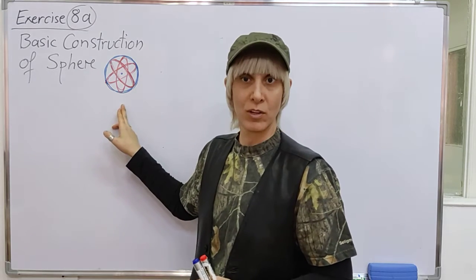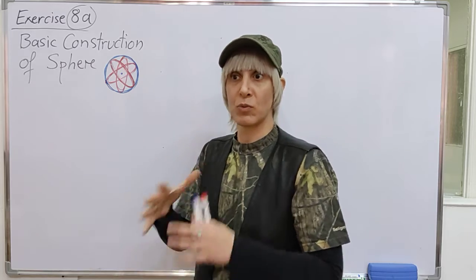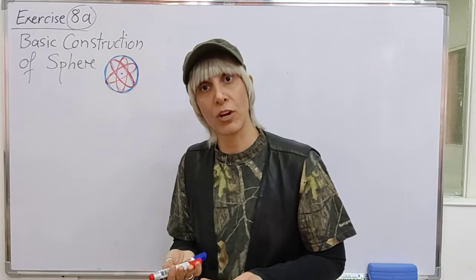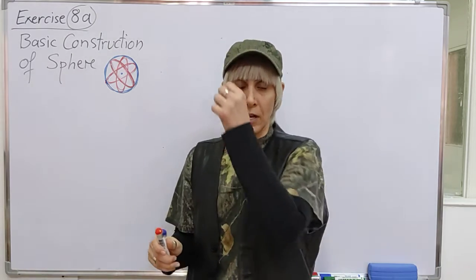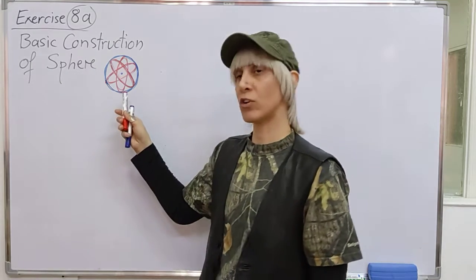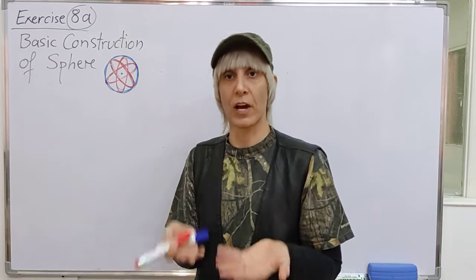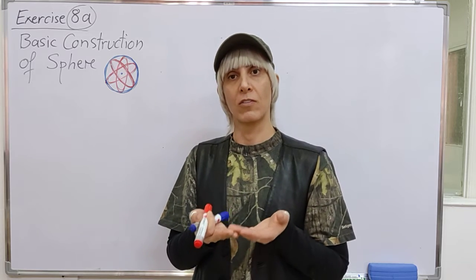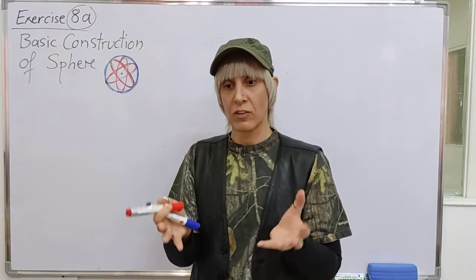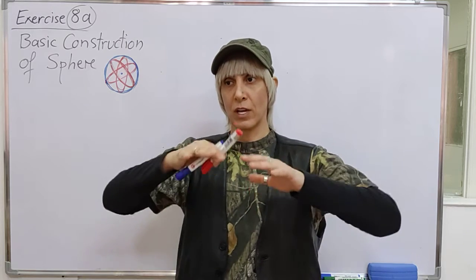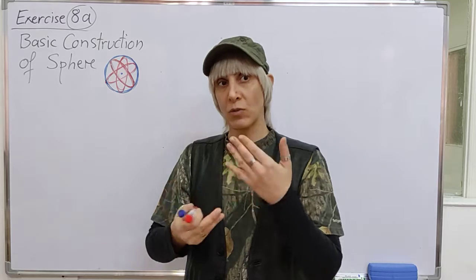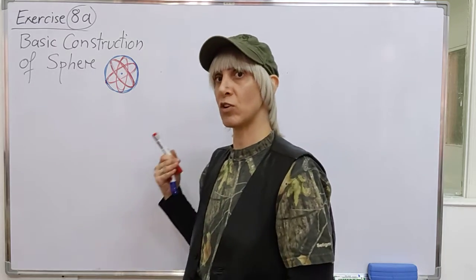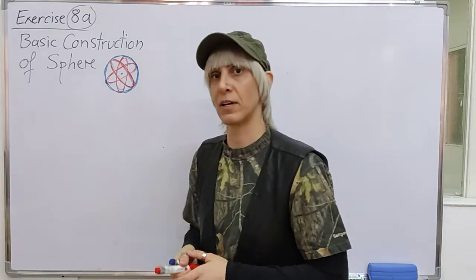Why do we need to know about the construction of a sphere and what do we need it for? Because in exercise 8b, you will be drawing objects based on the sphere. So before we can draw objects based on the sphere, we need to know first how to construct it correctly. The basic construction of every object is important for us to understand the geometry of the shape, so that later when we change the geometry while drawing another object, this basic construction knowledge helps us. It will become more clear as we go along.